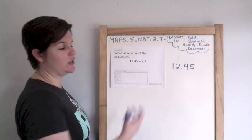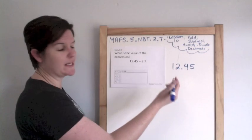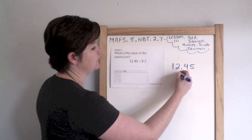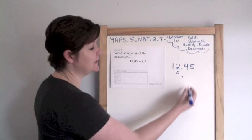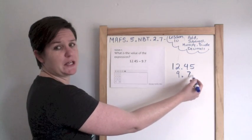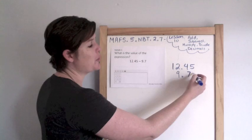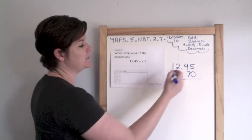So we have 12 and 45 hundredths. It's a little bit challenging to do this horizontally, so I'm going to line up my place values. So my 9 goes here in the ones place. Then my decimal is nice and neat and lined up. Then my 7, but there's nothing here. What do I... oh, it's 0. There we go. And I'm subtracting.